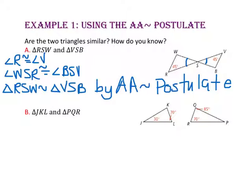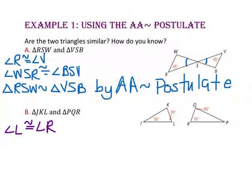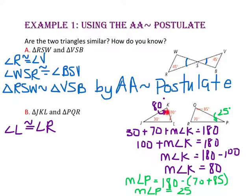For part B, let's look at triangle JKL and triangle PQR. We know that angle L is congruent to angle R because they're both 70 degrees. However, angle J and angle Q are not congruent because one angle is 30 degrees and the other is 85. We don't know the measure of angle K, but we can figure it out by the triangle angle sum theorem. We also don't know the measure of angle P, so let's find both measures. Since angle K is not congruent to angle Q and angle J is not congruent to angle P, the two triangles are not similar because the corresponding angles are not congruent.